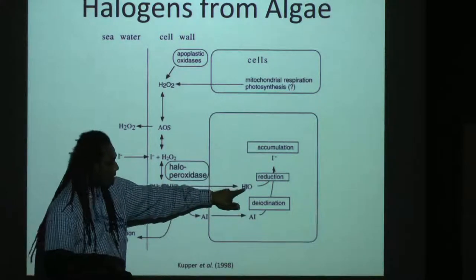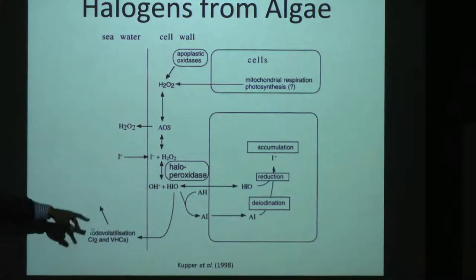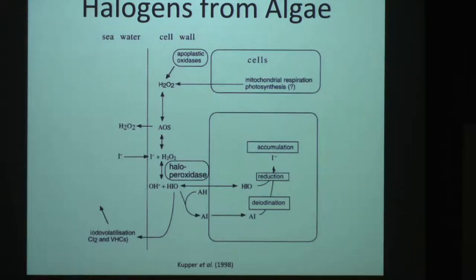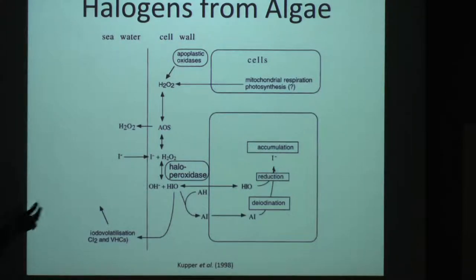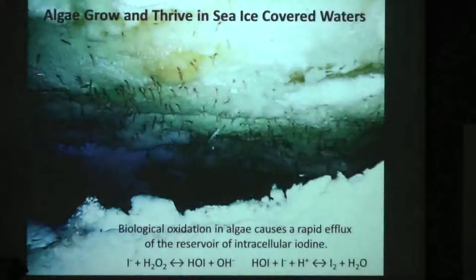Or you can get haloperoxidase being reduced and accumulated within the cells of the algae. This really happens very efficiently in the winter. The real reasons I don't know, but I figure it's cold with no sunlight. Maybe iodine is something they really like to survive — some survival mechanism.